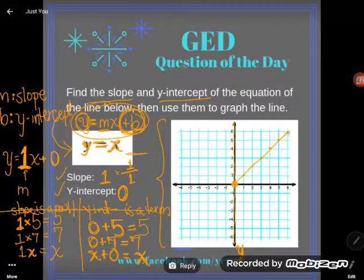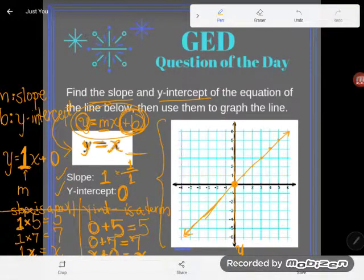But you can see that there is my line, and it would go the same way back here. And so there is the line y equals x. It's got a slope of one, it's got a y-intercept of zero.